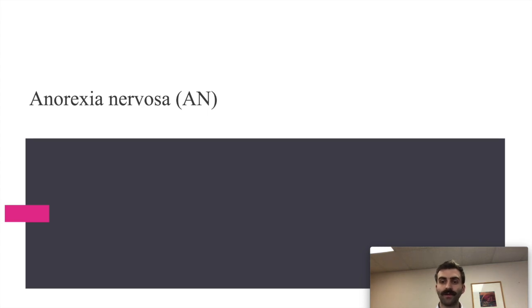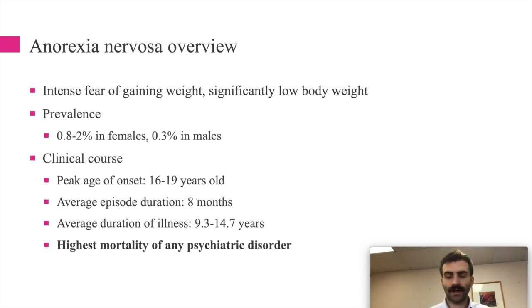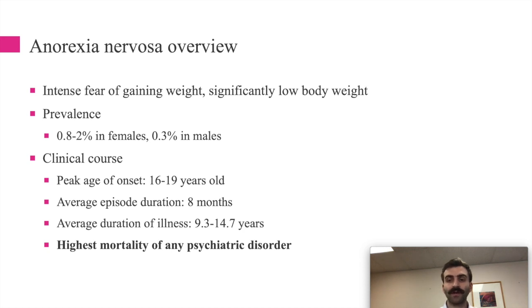That overview covered causes, pathophysiology, comorbid conditions, and history of eating disorders. Now let's start with anorexia nervosa. Anorexia nervosa involves an intense fear of gaining weight, and people with anorexia have a significantly low body weight — that low body weight is one of the defining features. Remember that.